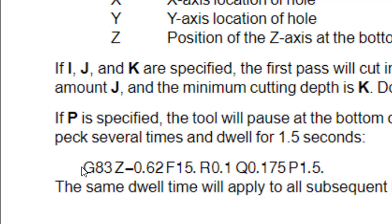Here's an example of a peck drilling cycle. The code looks like: G83 Z-6.2, etc. With one line of code, the cutter goes in and out with pecks that are 0.175 inches deep. Each time it drills to that depth, retracts out of the hole, then drills back down again, repeating until it reaches the bottom of the hole — in this case Z negative 0.62.